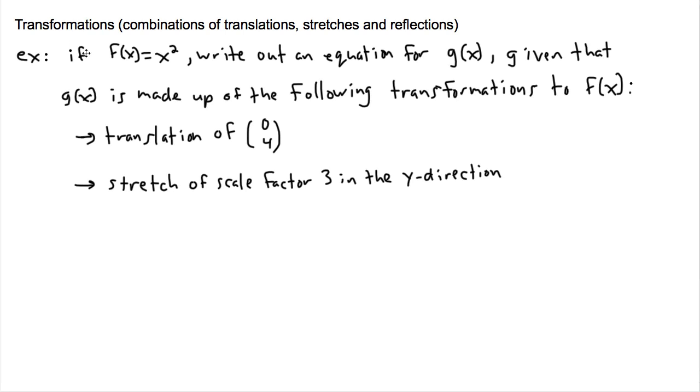Here I've just devised an example. If f(x) is x squared, write down an equation for g(x) given that g(x) is made up of the following transformations to f(x): first a translation of (0,4), and then a stretch of scale factor 3 in the y direction.